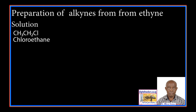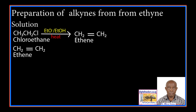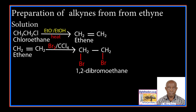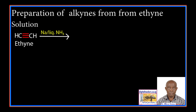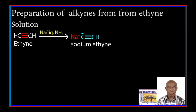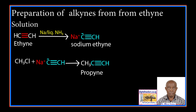Solution: chloroethane undergoes an elimination reaction in the presence of hot potassium ethoxide in ethanol to form ethene. Ethene reacts with bromine in the presence of tetrachloromethane to form 1,2-dibromoethane. 1,2-dibromoethane undergoes an elimination reaction in the presence of hot potassium ethoxide in ethanol to form ethyne. Ethyne in the presence of sodium and liquid ammonia forms the sodium salt of ethyne. The sodium salt of ethyne reacts with methyl chloride to form propyne.